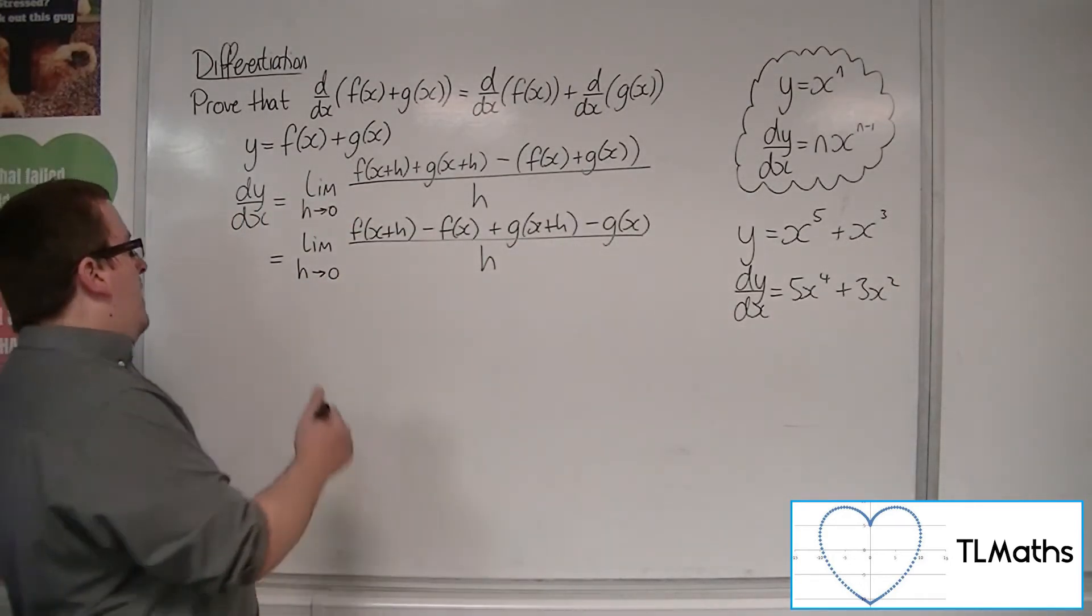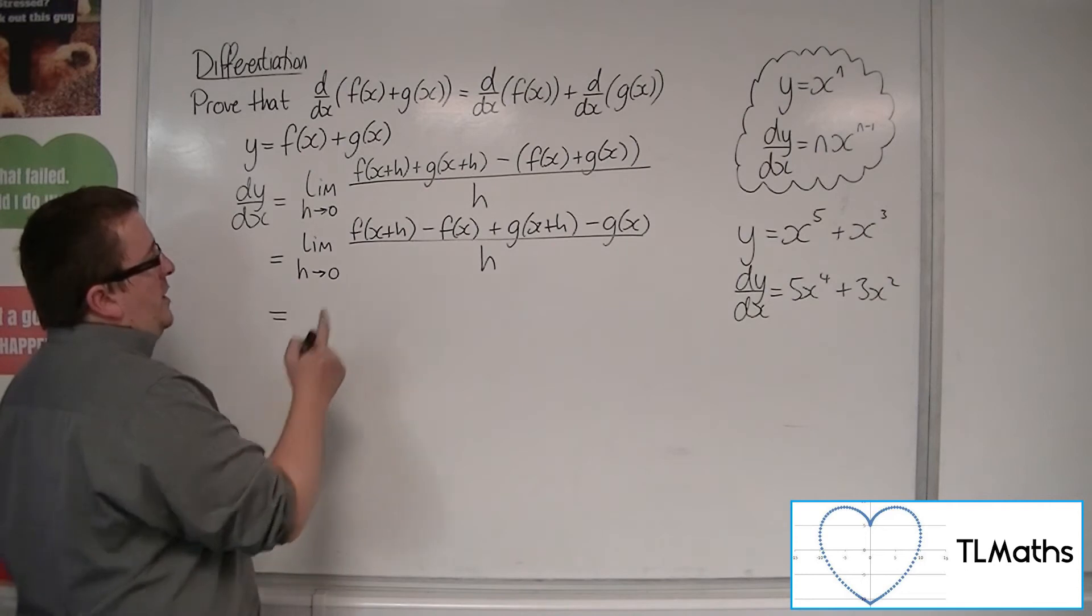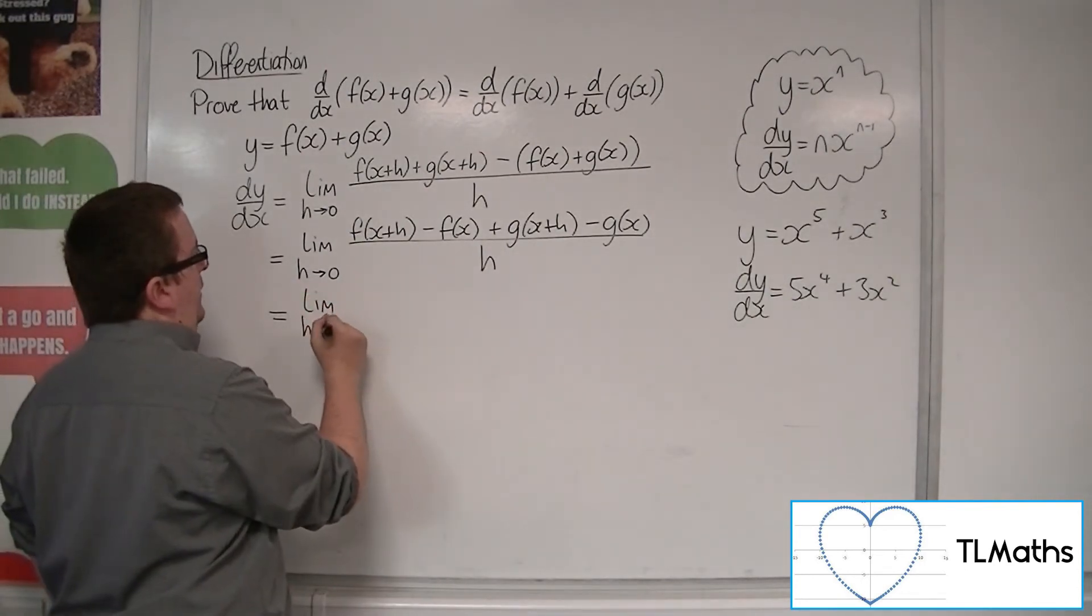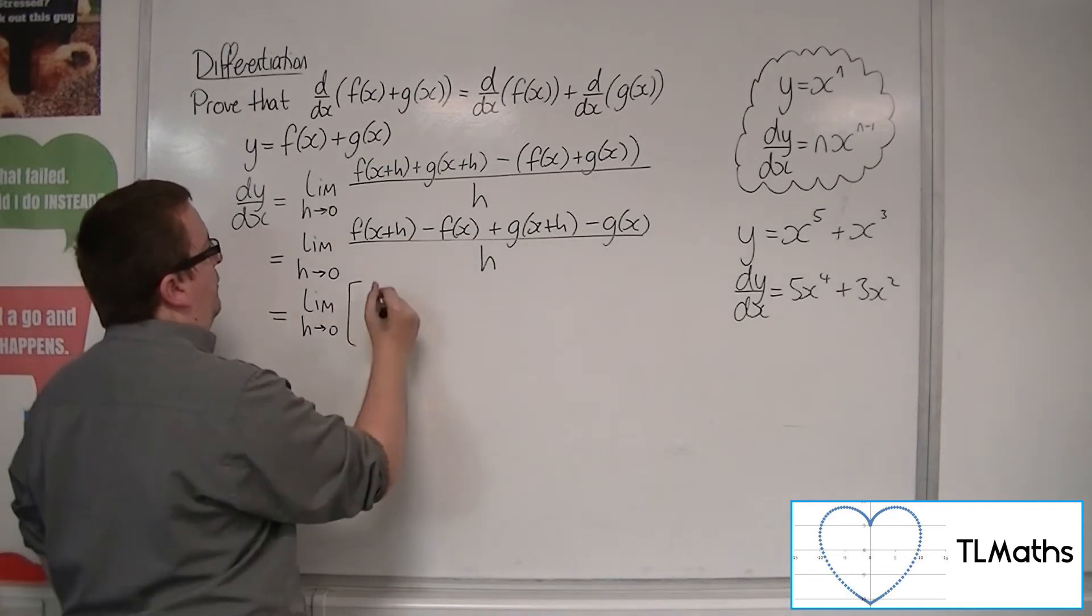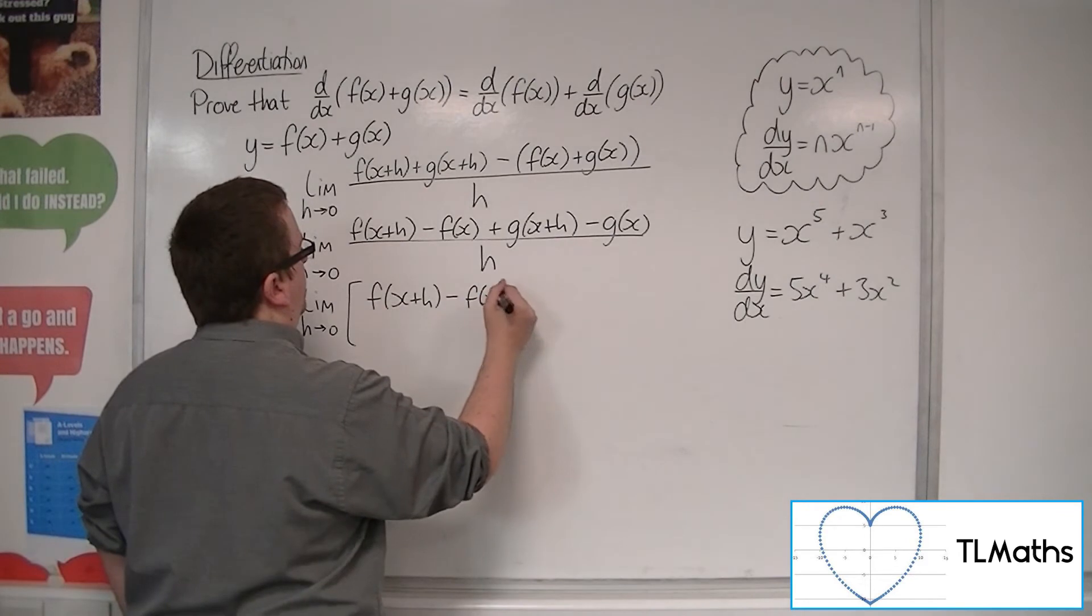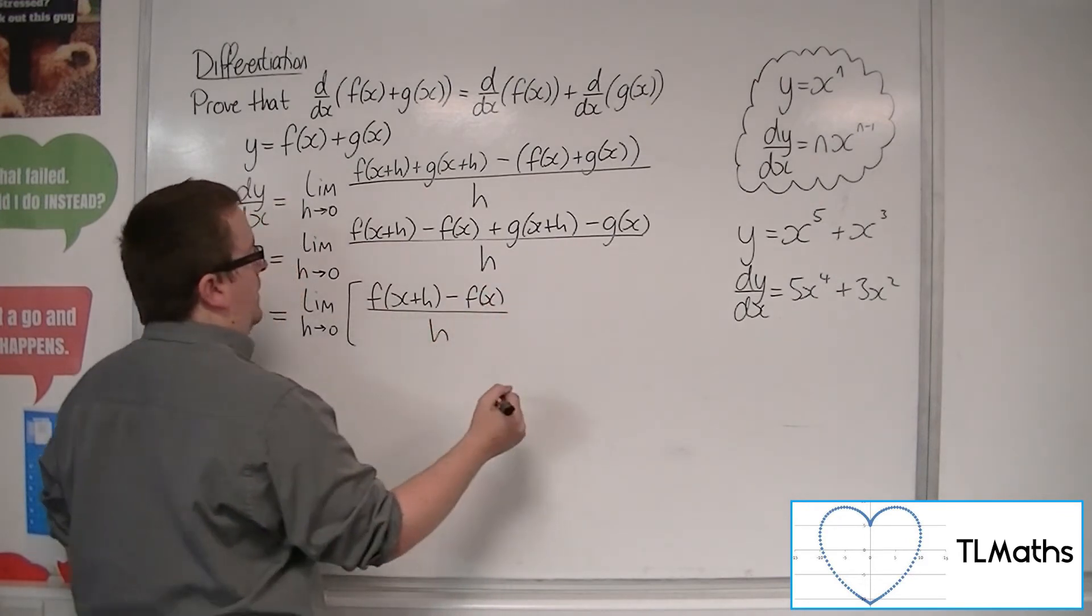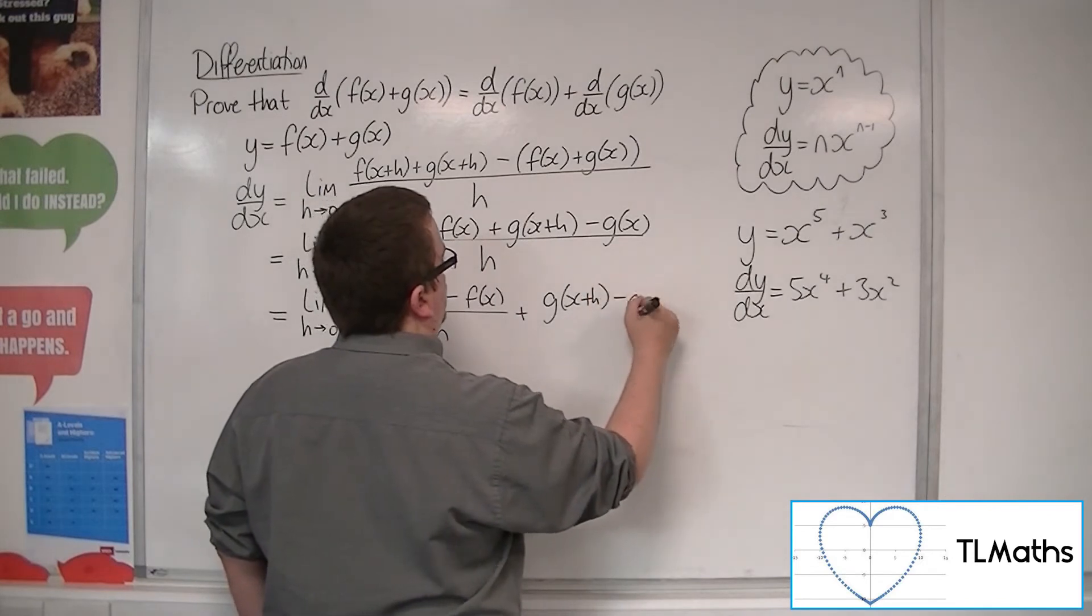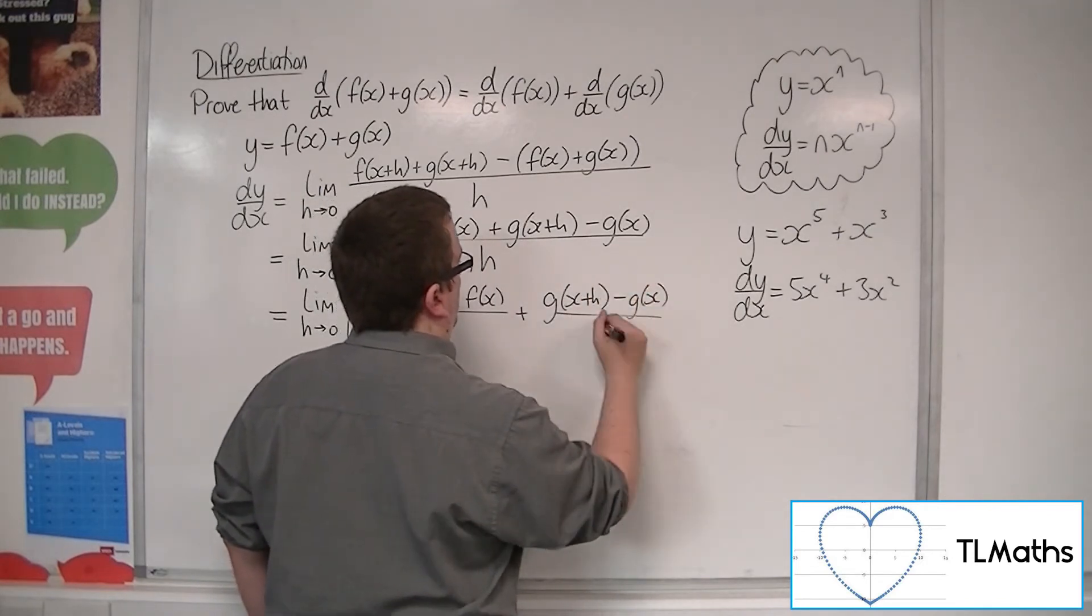So then I can break this fraction apart. So I've got the limit as h tends to 0 of f of x plus h, take away f of x, all over h, plus g of x plus h, take away g of x, all over h.